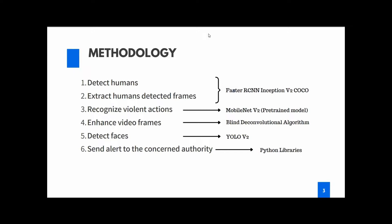For recognizing violent actions from extracted frames, we will be using the MobileNet V2 pre-trained model, which according to one of the journal papers we reviewed delivers a really high amount of accuracy while detecting violent actions from a particular video frame. That's why we'll be using MobileNet V2 for recognizing violent actions in step three.